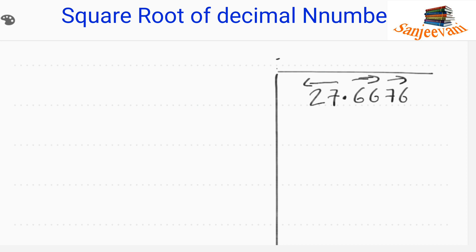We consider the first pair, which is 27. We choose a number whose square is equal to or less than 27. 4×4=16, 5×5=25 — we take 5. 5×5=25, and we are left with 2. Since we are past the decimal point pairing, we place a decimal point in the answer here.